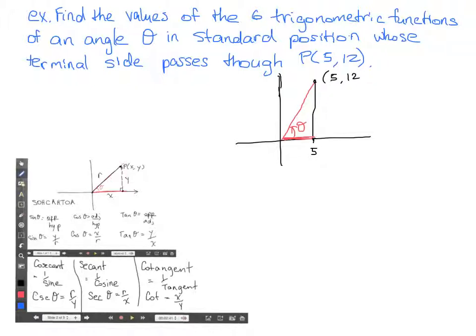And then we drop the height. Let's make it red. That's the initial side. And then we have the angle there, theta. We don't know what it is, but we don't really need to know what it is. All we need to know is what is sine of that angle, cosine of that angle, so on and so forth. So we do know that going across from here to here, the measurement is 5. And going up from here to here, the measurement is 12.